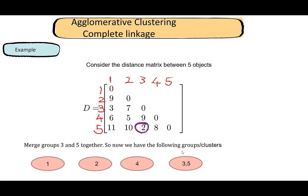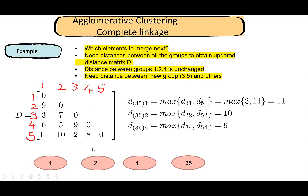Next we need to update our distance matrix the same way as for single linkage — we calculate distances between all the new groups. The distances between one, two, and four don't change; what we focus on is the distance between the new group {three, five} and all the other groups. I've put the new group structure at the bottom for reference. The distance between {three, five} and one is the distance between the farthest elements, so I calculate d(3,1) and d(5,1).